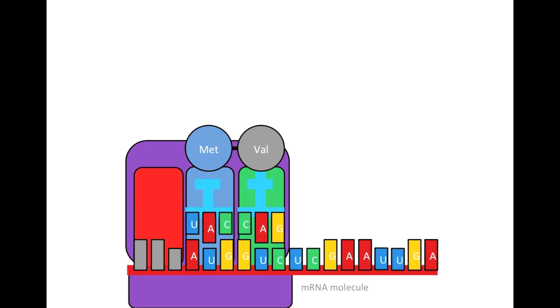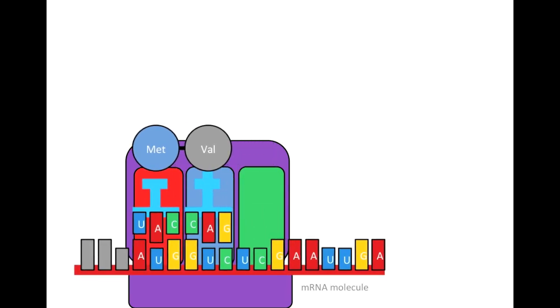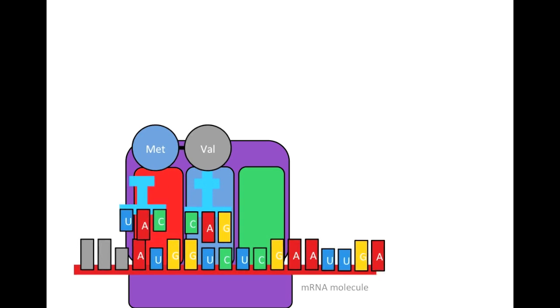The ribosome will then shift down the mRNA. And the first tRNA, which has now been shifted to the E or exit site, will be expelled from the ribosome complex. As you can see, the tRNA in the P site now bears both of the amino acids, or a growing polypeptide. The P stands for polypeptide.